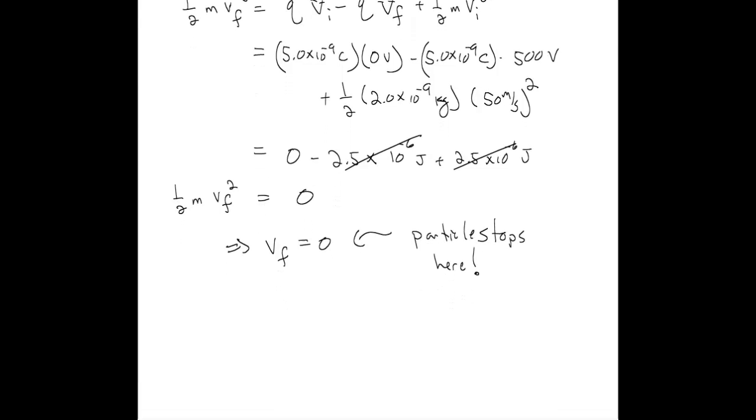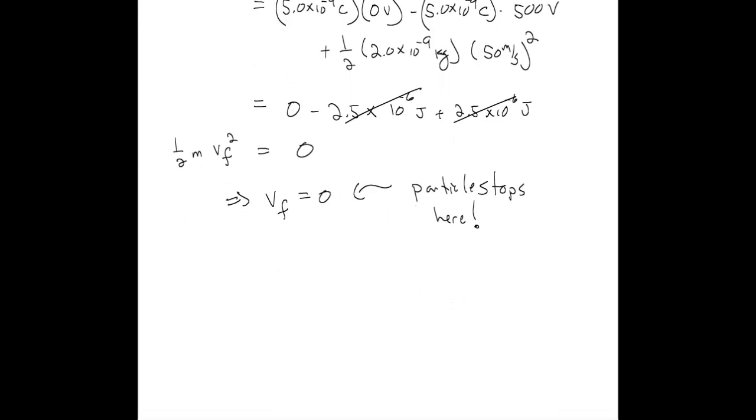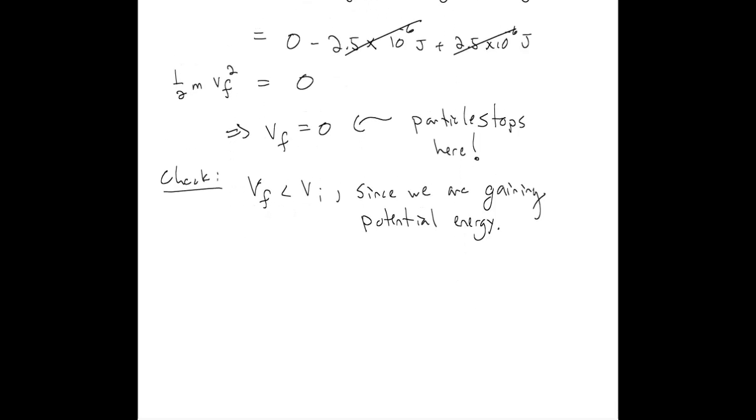Now we should ask, does this make sense? Indeed, it makes sense that the final velocity is smaller than the initial velocity because we're gaining potential energy. Everything seems to make sense, so we're good. The final velocity was zero in this particular case.